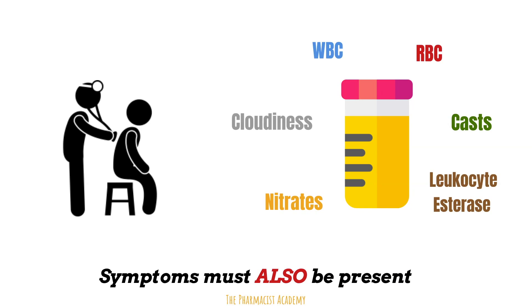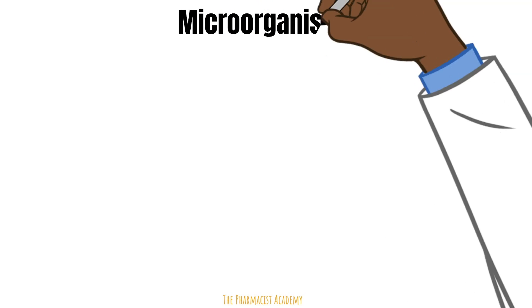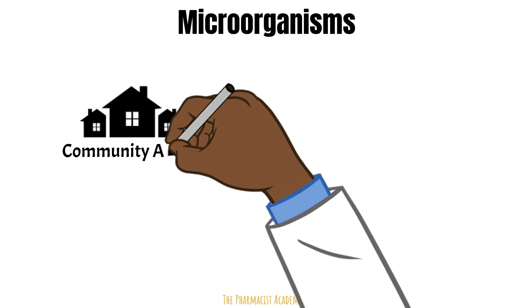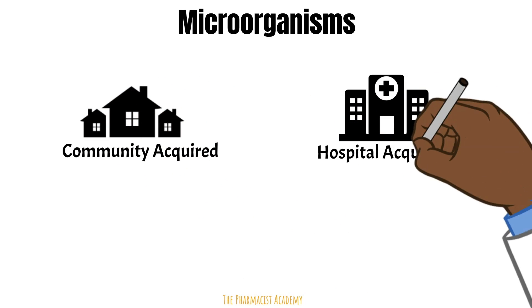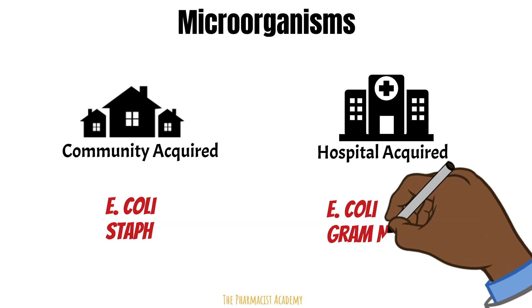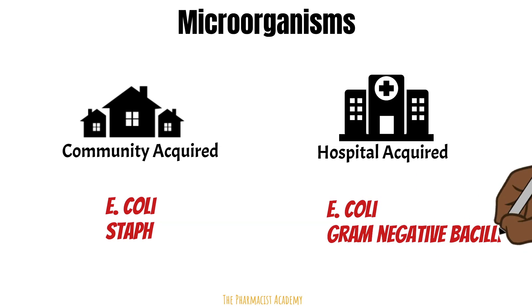After diagnosis, treatment is based on the type of UTI and which microorganism is causing it. The microorganisms present depend on whether the UTI occurred in the community or the hospital. Hospital-acquired UTIs involve more resistant organisms, requiring more aggressive treatment. For community-acquired UTIs, the most common organisms are E. coli and staph species. For hospital-acquired UTIs, the most common are E. coli and gram-negative bacilli such as Pseudomonas.